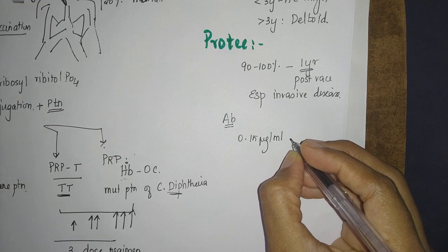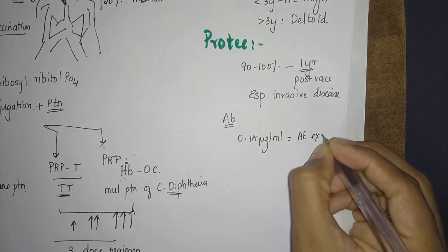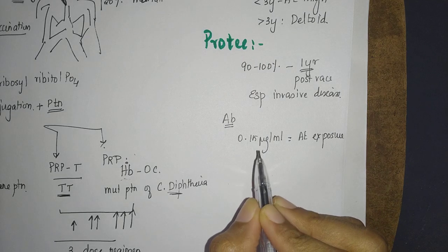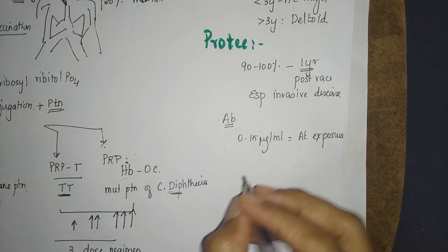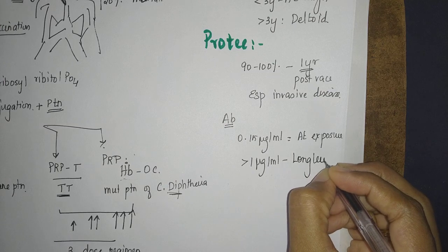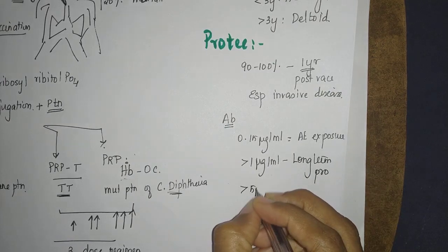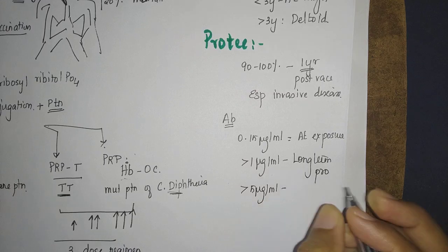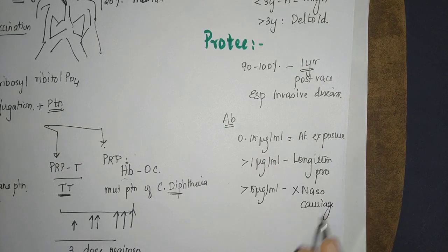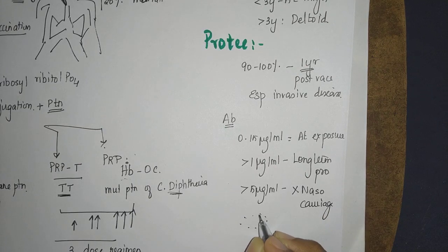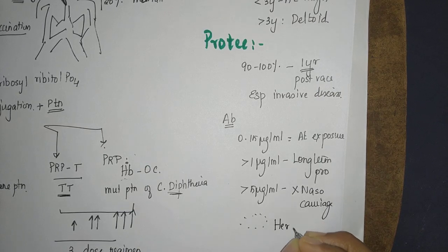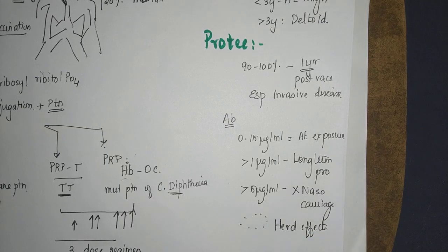What they found out was when antibody was 0.15 microgram per ml, this gave protection at exposure point. If it was more than 1 microgram per ml, it was associated with long term protection. If it was more than 5 microgram per ml, then it inhibited nasopharyngeal carriage. This is important because if many in the community are vaccinated, then even the unvaccinated will be protected. So there was herd effect for Haemophilus influenza B vaccination.